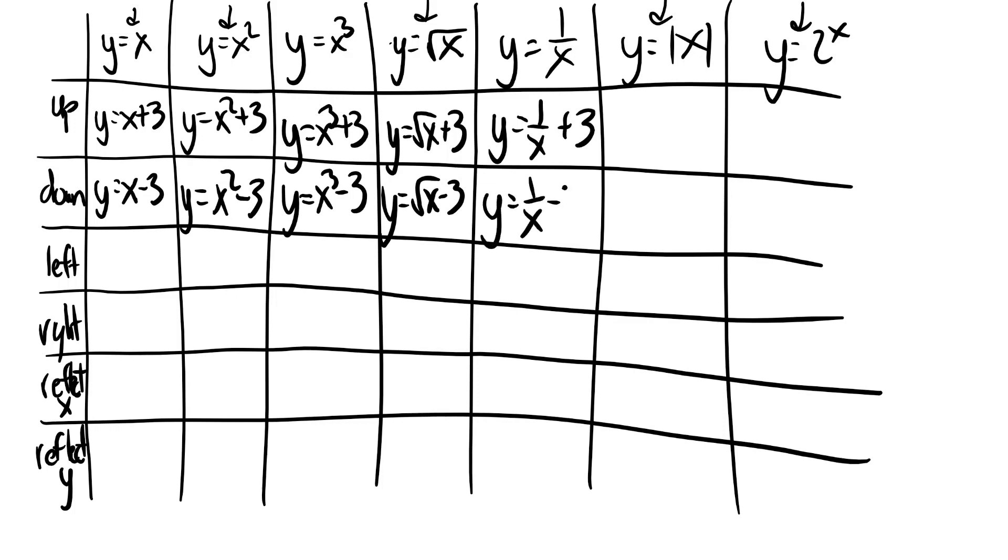Now, for the fraction-y ones, the inverse variation guy here, we do the same thing. You just put a plus 3 on the end for up, and a minus 3 on the end for down. Left and right are where things are going to get a little more interesting for the fraction-y one. Absolute value, same idea. Absolute value of x plus 3. Absolute value of x minus 3. And exponential, same idea. You rewrite your exponential, you write plus 3, that's up. You rewrite your exponential, and you write minus 3, and it's down.